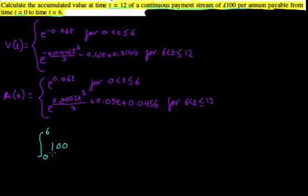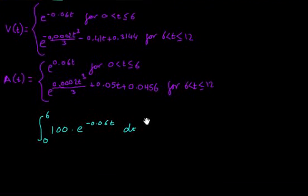We're going to multiply it by v(t), and in this case v(t) for the range between 0 and 6 is e to the negative 0.06t, and that's dt. I'm going to take the 100 out, so let's find the integral.